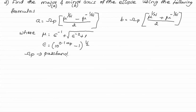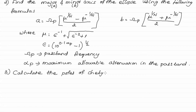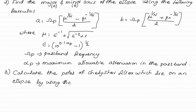In these formulas, ωp is the passband frequency and αp is the maximum allowable attenuation in the passband. The third step is to calculate the poles of the Chebyshev filter, which lie on an ellipse, using the provided formula.